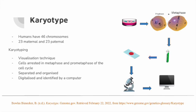A karyotype is a visualization technique that arrests the cells during the metaphase and prophase phase of the cell cycle, where the chromosomes are most tightly coiled. They are then separated by a centrifuge and observed under a microscope where they are separated again. Once digitalized, the computer pairs and organizes them into a photograph, an example of which I'll show on the next slide.